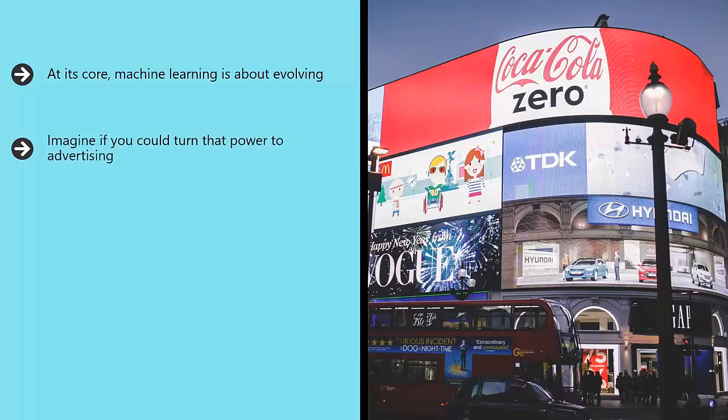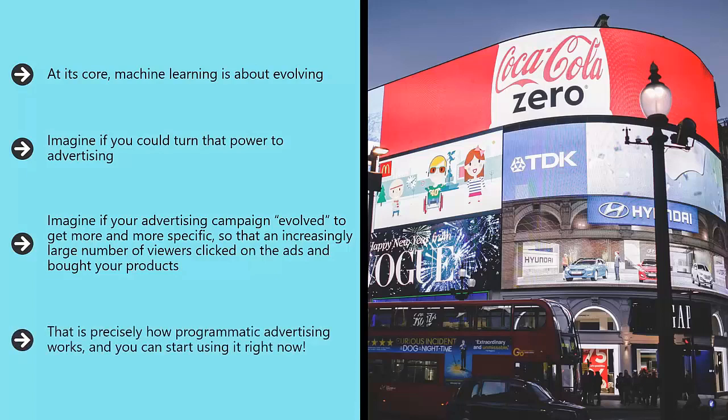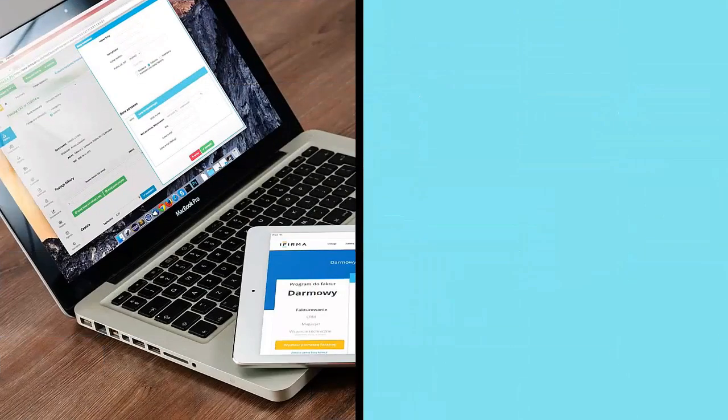Imagine if you could show precisely the right advertisements to precisely the right people at precisely the right times. Imagine if your advertising campaign evolved to get more and more specific, so that an increasingly large number of viewers clicked on the ads and bought your products. The longer the campaign ran, the more your profits would increase and the less you'd spend on ineffectual ads. That is precisely how programmatic advertising works, and you can start using it right now.